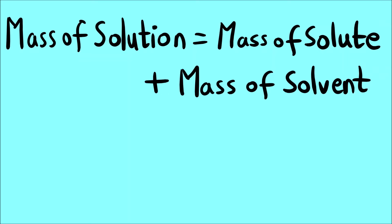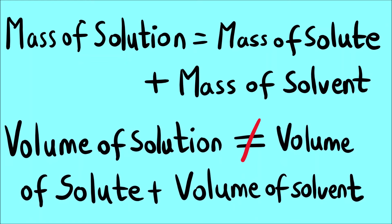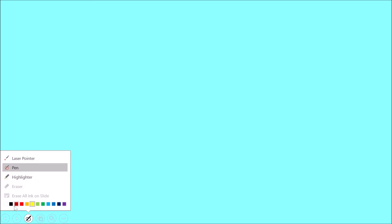There is another important point here. In the next video we will see percentage volume by volume, where the denominator is volume of the solution. This is a very important point: mass of the solution equals mass of solute plus mass of solvent, but volume of the solution is NOT equal to volume of solute plus volume of solvent. Let us try to understand why.